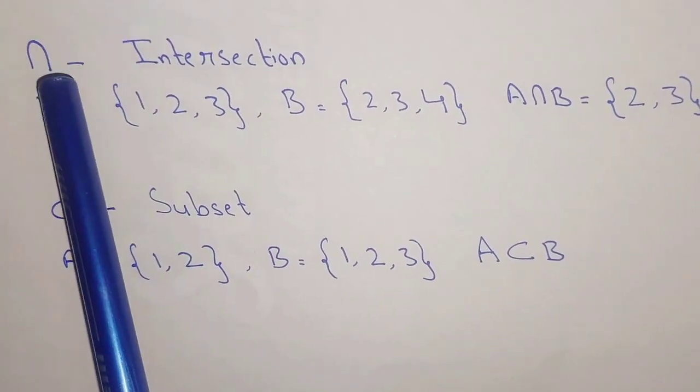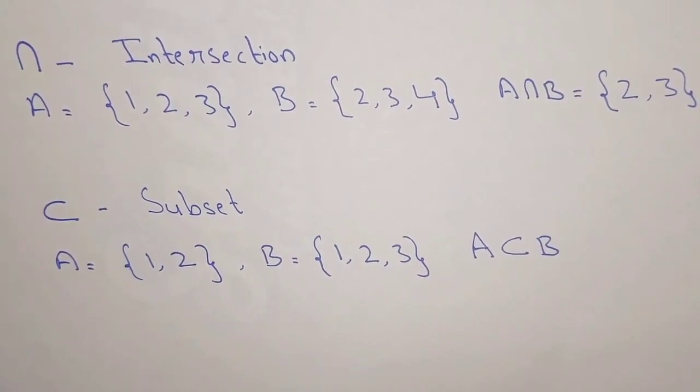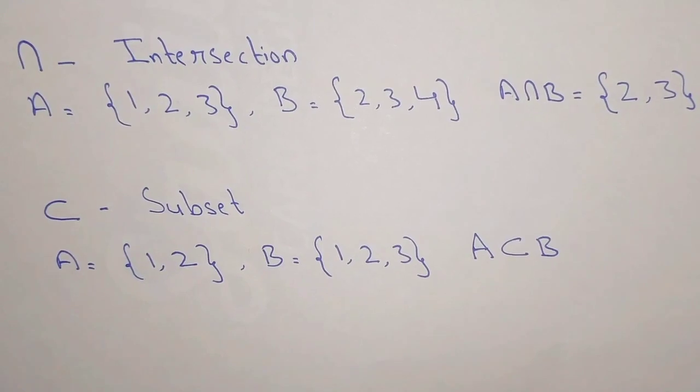Another notation is ∩, the intersection. It means whenever we have two or more sets, we write the common elements in a new set.